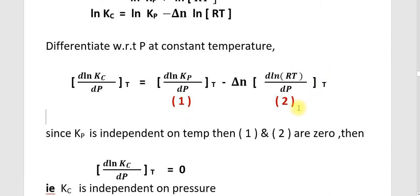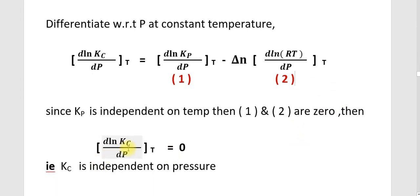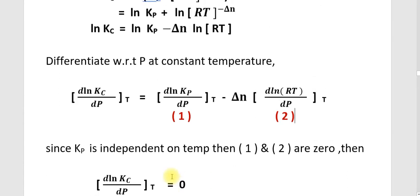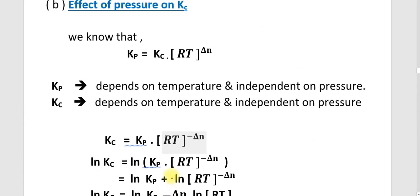Since Kp is independent of pressure, the first term and the second term are both zero. Therefore, d(Ln Kc)/dP at constant temperature equals zero. That means Kc is also independent of pressure.